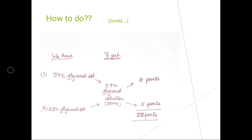Then diagonally take the difference of the two numeric figures. For 34% and 29%, the difference is 5, written at the bottom right. For 21% and 29%, the difference is 8, written at the upper right — as shown in the figure. The proportion obtained is 8 parts of 34% glycerol solution and 5 parts of 21% glycerol solution. Adding these two fractions gives 13 parts total.